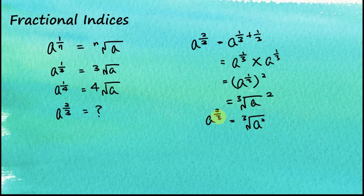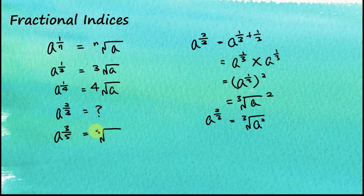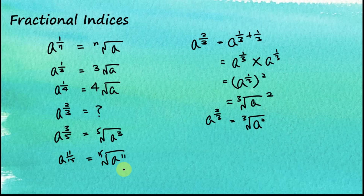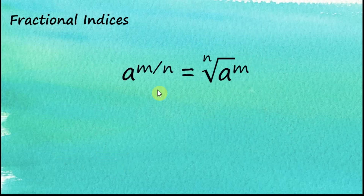So we learned that a to the power of 2 over 3 is equal to the cube root of a squared. From here, we can see that the denominator becomes the root, and the numerator is the power of the number. For example, a to the power of 3 over 5 is equal to the fifth root of a cubed. Another example: a to the power of 11 over 15 will become the 15th root of a to the power of 11. So we can conclude that a to the power of m over n is equal to the nth root of a to the power of m.